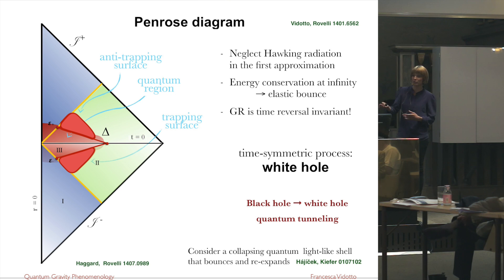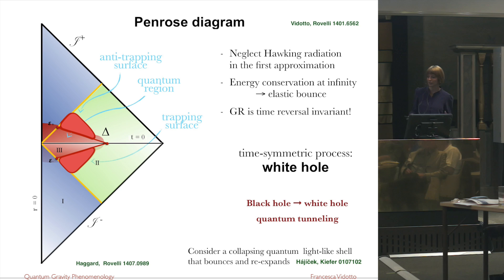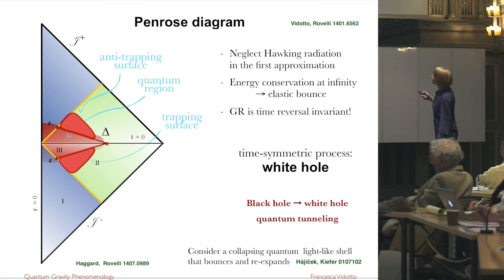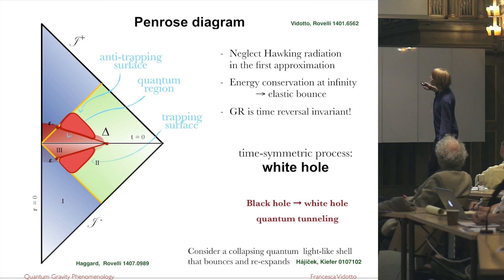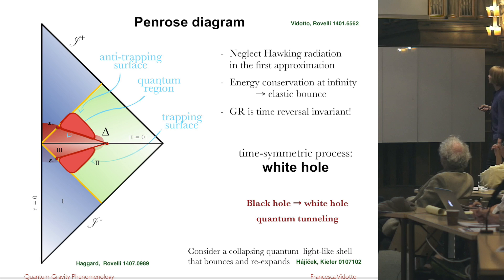If I remove the dissipation, then the process is fully time-reversal invariant. This means that I can take the time-reverse process of a black hole — the contraction of a collapse, which is a white hole — and glue it in the future of the black hole. So I don't have just a trapping surface; I also have an anti-trapping surface, meaning everything has to go out from there.